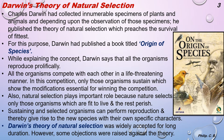Now coming to Darwin's theory of natural selection. On the right side you can see the book 'On the Origin of Species' by Darwin. Charles Darwin collected innumerable specimens of plants and animals, and based on his observations he published the theory of natural selection, which preaches the survival of the fittest.